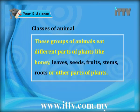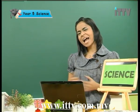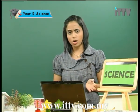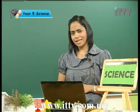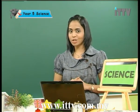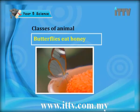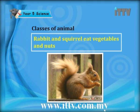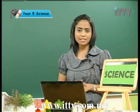Herbivores eat different parts of plants like honey, leaves, seeds, fruits, stems, roots or other parts of plants. For example, butterflies, which are herbivores, actually eat honey. Garden snails eat stems and leaves. Rabbits and squirrels eat vegetables and nuts — squirrels are always related to nuts obviously.